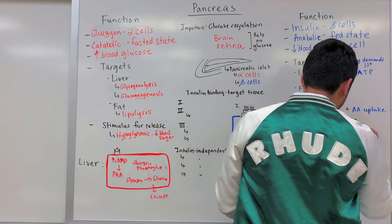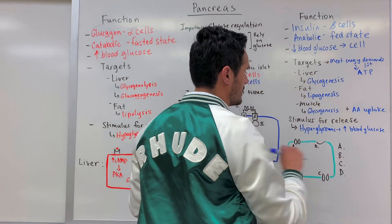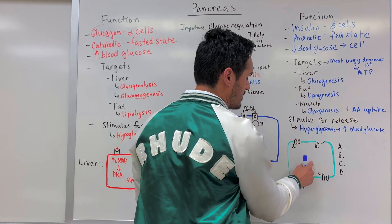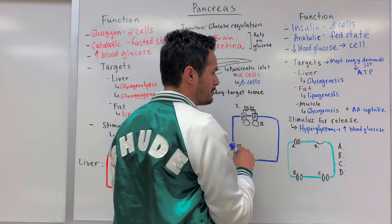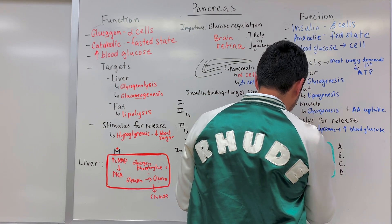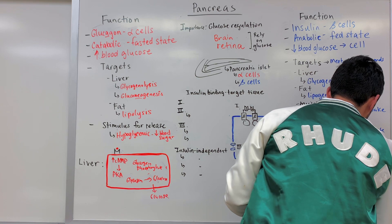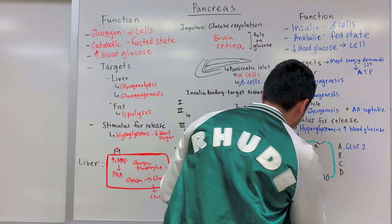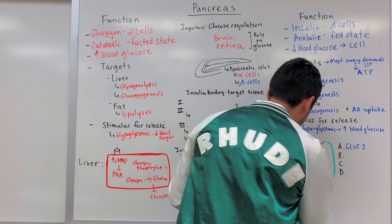Insulin decreases blood glucose levels by getting glucose into the cell. Once we stimulate the release of insulin — represented here by a beta cell — a lot of glucose is circulating in the blood and flows into the cell through a GLUT2 transporter. It then gets broken down through glycolysis, the Krebs cycle, and the electron transport chain, increasing the production of ATP.